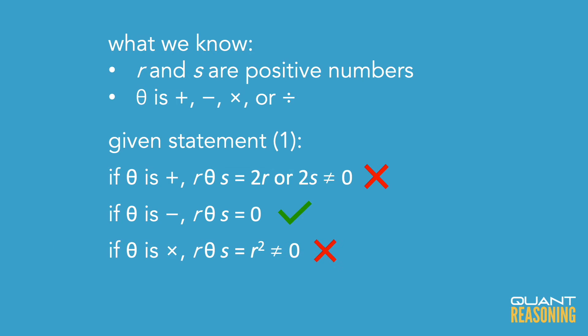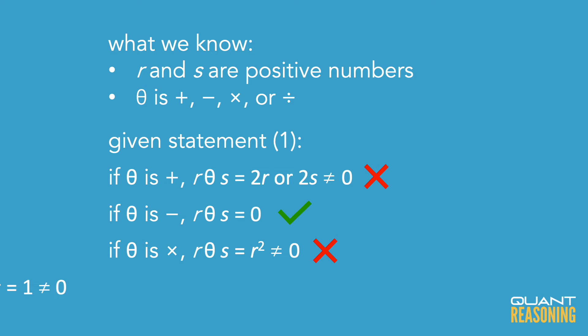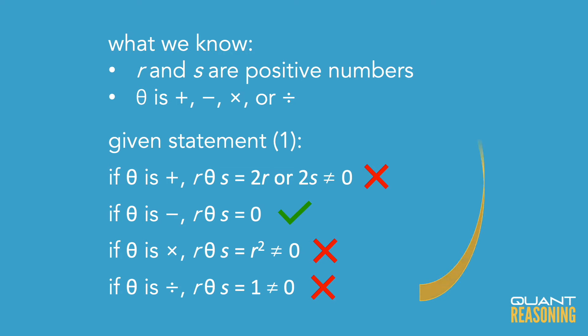If r equals s and their product is zero, keeping in mind they're positive numbers — the product of two positive numbers would never be zero. How about division? If r equals s and they're both positive, dividing one by the other would give us one. So that's not possible either. Statement one on its own does narrow down the possibilities to only subtraction, so statement one is sufficient on its own.